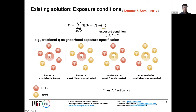Let me give you a concrete example: the fractional Q neighborhood exposure specification. Under this specification, there are four cases. The ego node is treated and most of the neighbors are treated — this is the first type of exposure condition. By 'most,' I mean the fraction of treated neighbors is greater than Q. Similarly, we can define three other different exposure conditions, compare across them, and understand how the spillover effect varies across different exposure conditions.